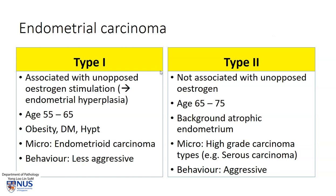There are two main types of endometrial carcinoma. Type 1 is associated with unopposed estrogen stimulation, so there is often a precursor state of endometrial hyperplasia. This hyperplasia may manifest with abnormal uterine bleeding, for example postmenopausal bleeding or intermenstrual bleeding. Often this occurs around the 55 to 65 year age group, and there may also be pre-existing obesity, diabetes, or hypertension.